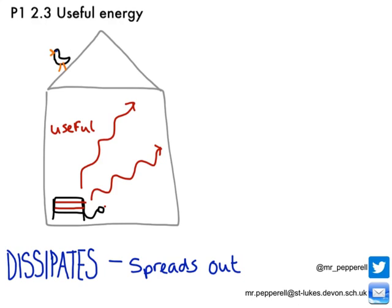So where does all this wasted energy actually go? Well, any time energy is transferred to heat it pretty much gets wasted, because it spreads out into its surroundings. We actually say it dissipates — and dissipates means it spreads out.